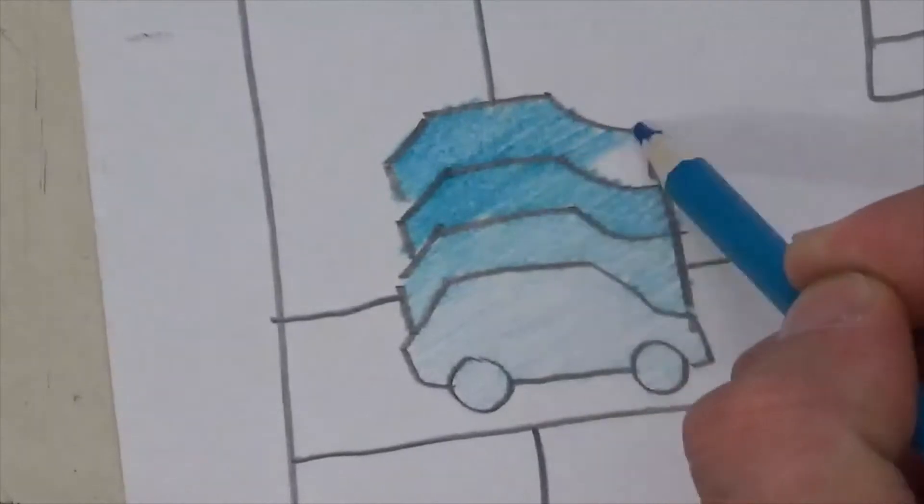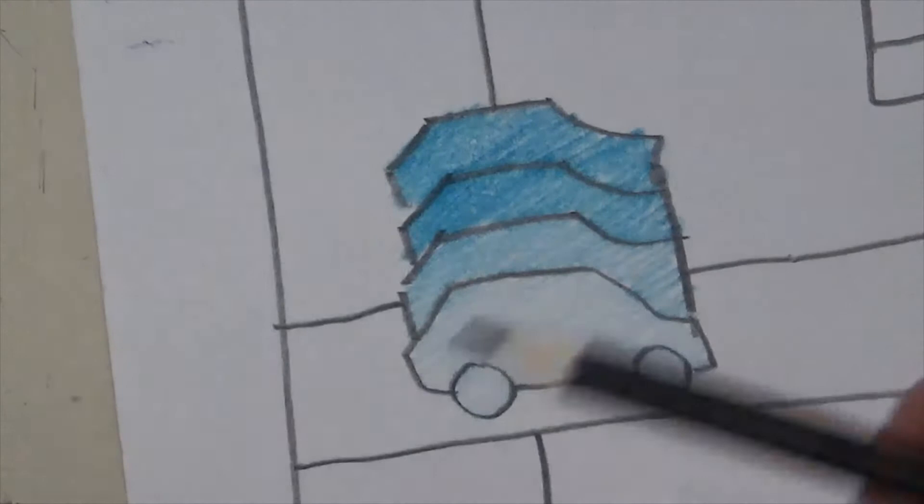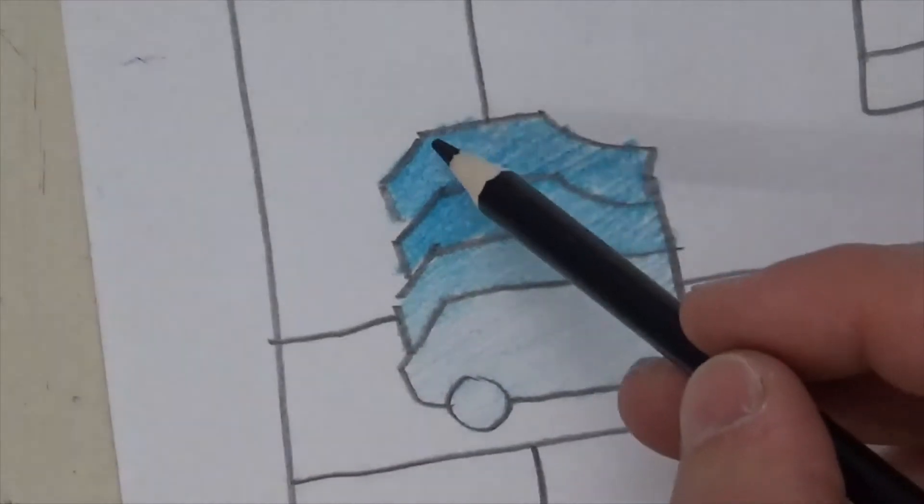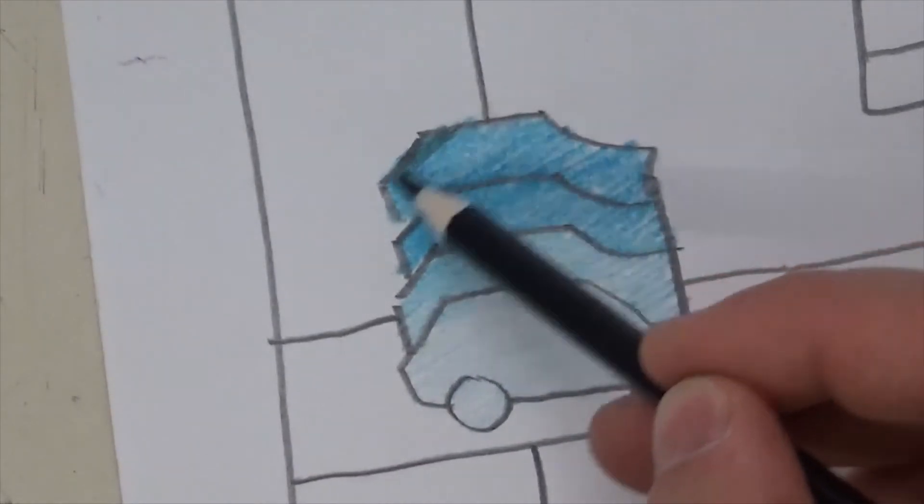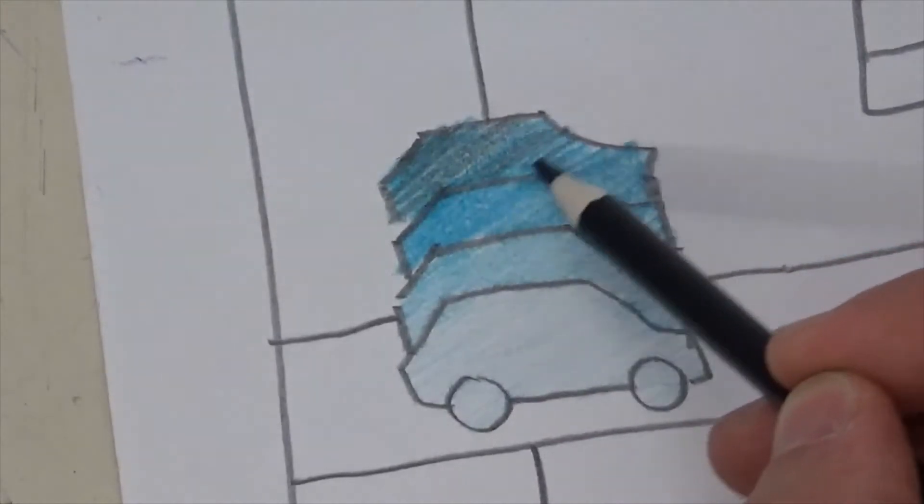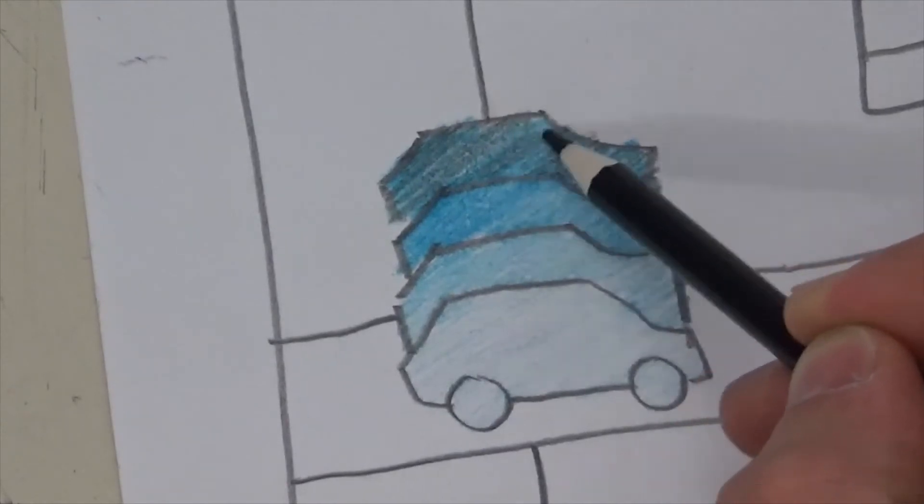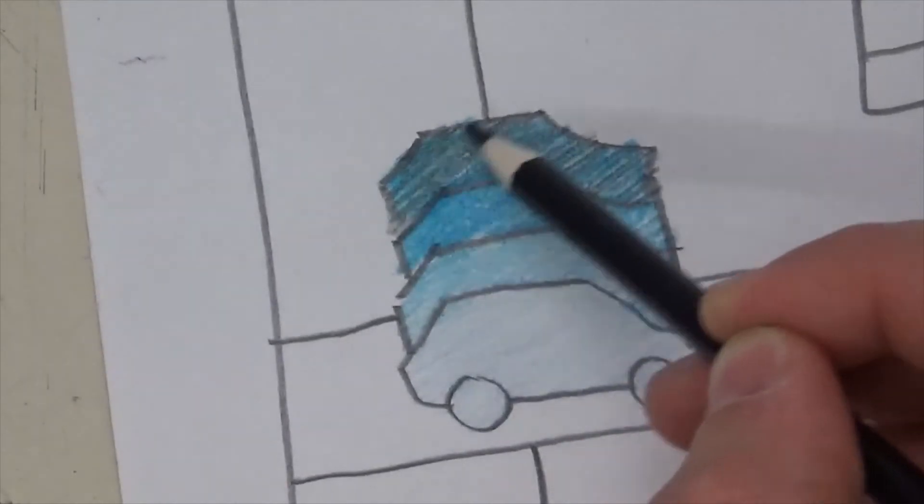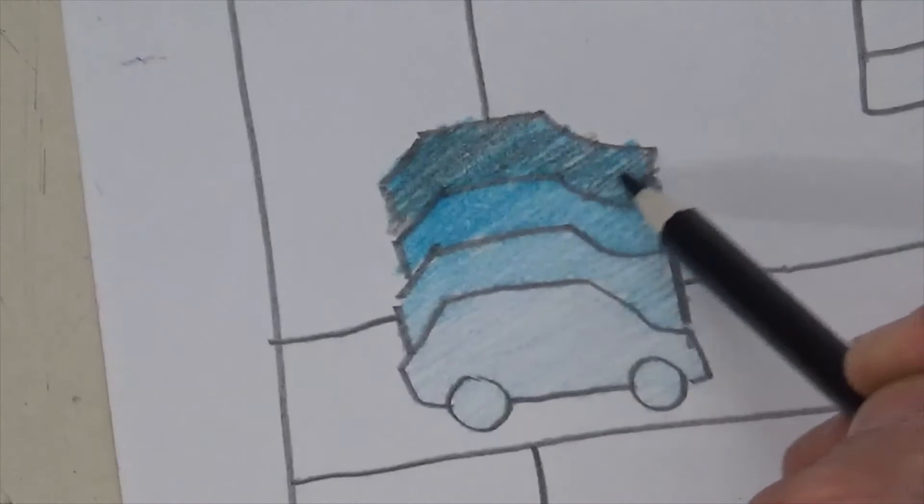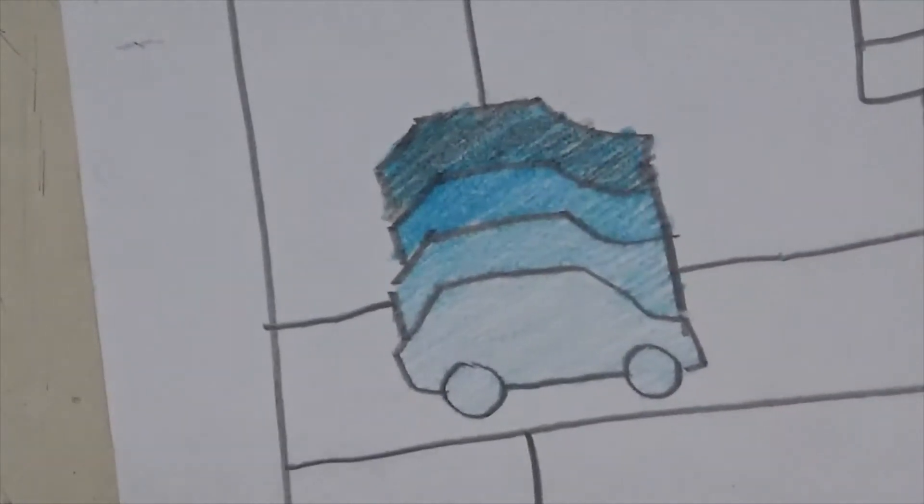So the last two are the same, except that I'm going to take black and very lightly go over this blue. So the second to last one is your normal color. Just push down hard and colorize it. But the very last one is your normal color, plus black.